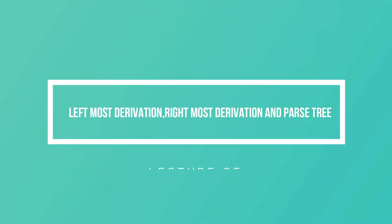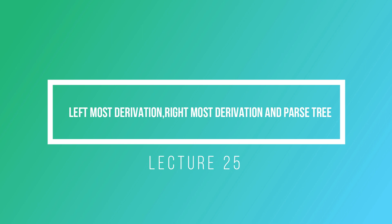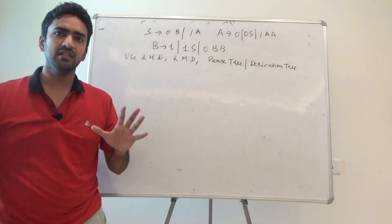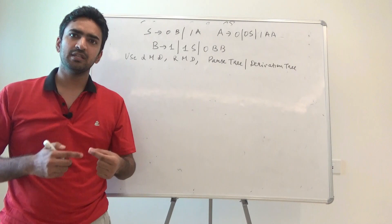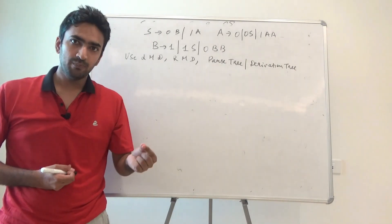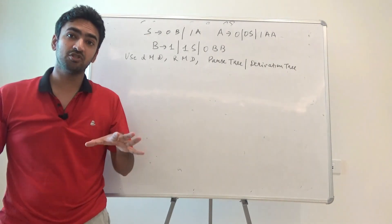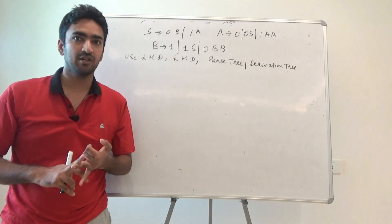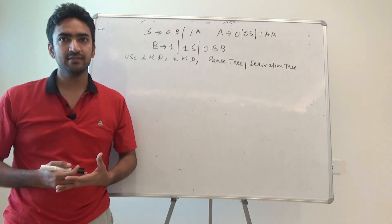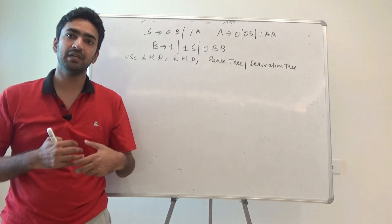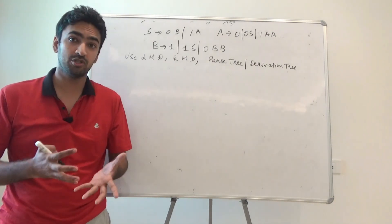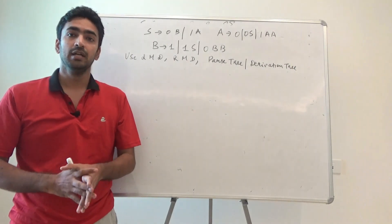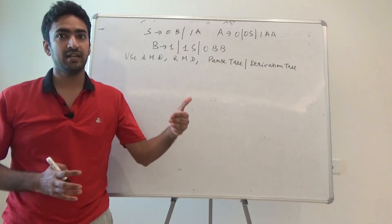Hello guys, I hope all of you are fine. In today's video we will be discussing the concept of left-most derivation, right-most derivation, and parse tree — also known as derivation tree. There are many ways in which a string can be derived. We have to pick the appropriate rule, then check which non-terminal to pick, since the non-terminal is the only one that will derive the string. We always start from the starting symbol.